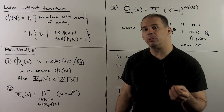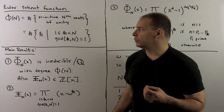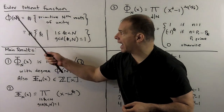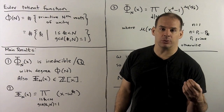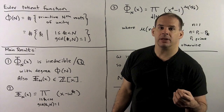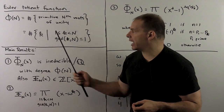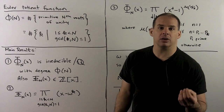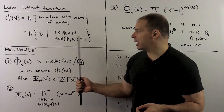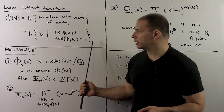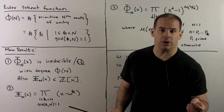With that, we can define the Euler totient function, denoted φ. φ(n) equals the number of primitive nth roots of unity, which is the same as the number of integers k with 1 ≤ k ≤ n such that k and n are relatively prime. Now we can state our main results.